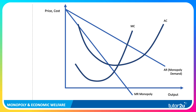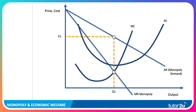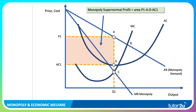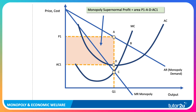A monopoly faces a downward-sloping average revenue curve - their demand curve - with marginal revenue lying below AR. A profit-maximising monopoly could in theory set an output of Q1 and set a price P1. And if the unit cost is AC1, then that shows the level of monopoly supernormal profits. Crucially, a monopoly is able to charge a price well above the actual marginal cost of supplying the good or service, which is at point C.